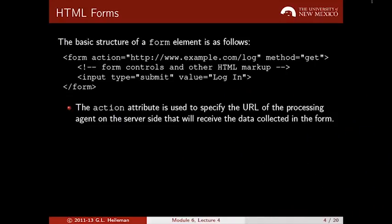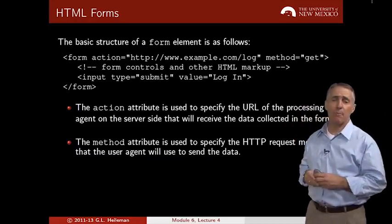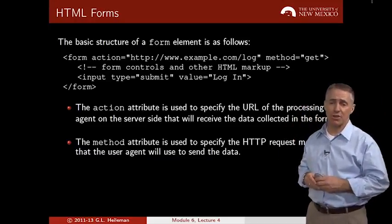The action attribute specifies the URL that the form data will be sent to once the login button is selected by the user. The method attribute specifies the HTTP request method — in this case, I'm specifying the GET method for this particular form.